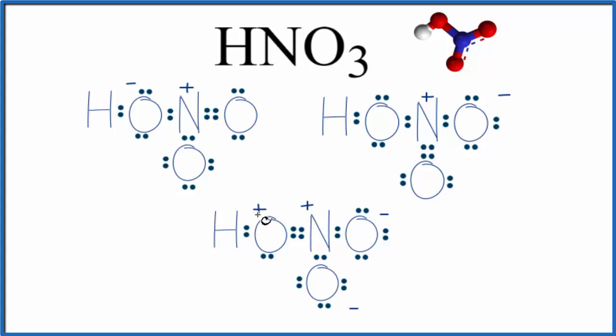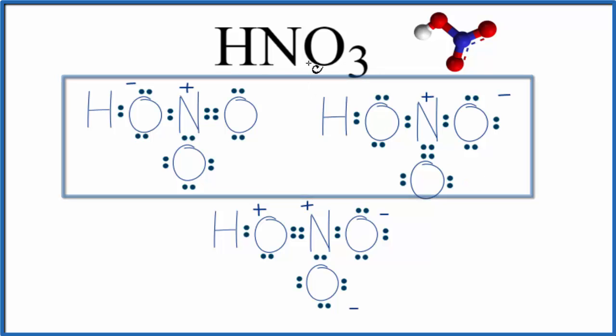Down here though, we have two positive charges, two negative charges, and one of the positive charges is on an oxygen, which is very electronegative. So this isn't a very likely or favorable Lewis structure. We might call this a minor resonance structure. These are the two major resonance structures for HNO3.